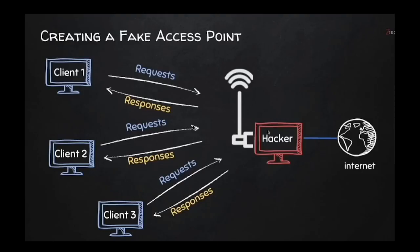Since we know how access points serve as intermediaries between devices and the internet, once a hacker serves as that access point it is game over — the hacker can see and intercept all traffic being sent over the network. They can perform man-in-the-middle attacks, evil twin attacks, ARP spoofing, redirect your traffic to a malicious website, or a site created by the hacker to install malware or spyware on your device or computer.